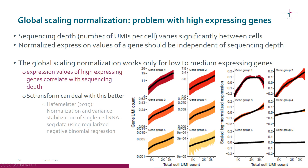However, for the high-expressing gene groups, the normalization doesn't actually flatten out at all — these are the problematic ones. There is still a relationship where cells with more total UMIs tend to show higher expression values for a gene, which is non-biological variation that we need to get rid of.